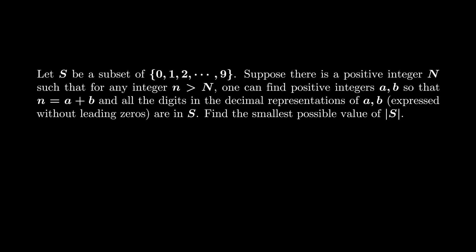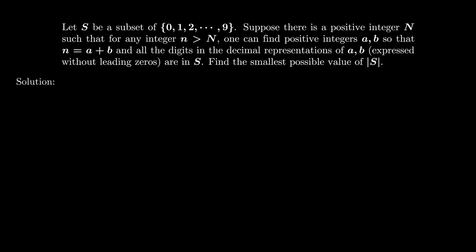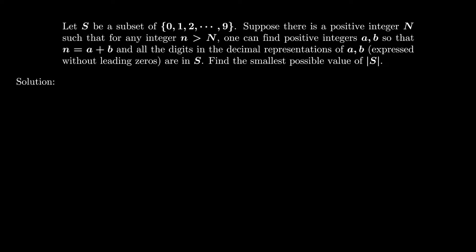To answer this kind of question, there are always two sides. On one hand, you need to construct an appropriate subset S with cardinality as small as possible. On the other hand, you need to show that this cardinality cannot be reduced, which means that your solution is indeed the minimum.